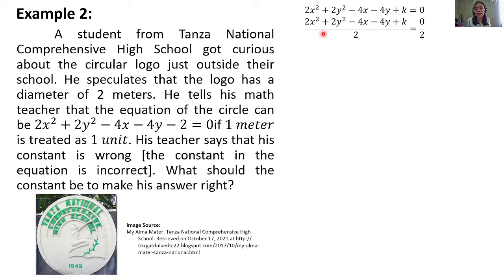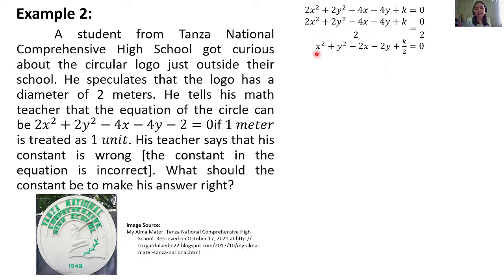We will divide both sides by 2 para mas madali tayong makapag-completing the square mamaya. Pag dinivide natin both sides by 2: 2x²/2 = x², 2y²/2 = y², −4x/2 = −2x, −4y/2 = −2y, and k/2 remains. 0 divided by 2 is 0. So we have x² + y² − 2x − 2y + k/2 = 0.